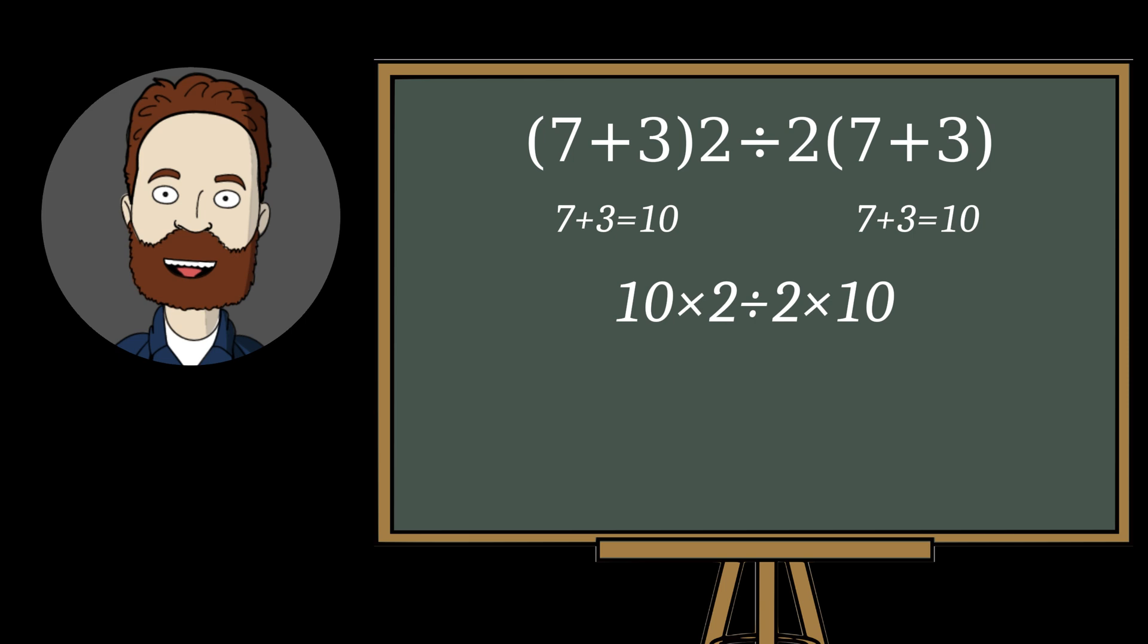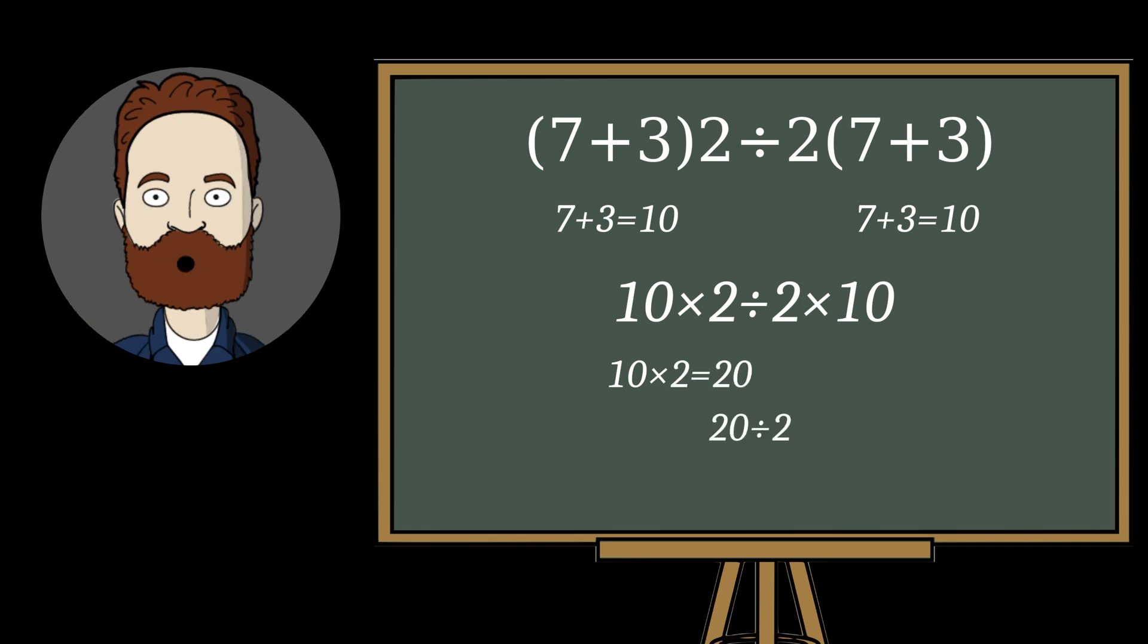and perform multiplication and division in order from left to right. 10 multiplied by 2 equals 20. 20 divided by 2 equals 10, and 10 multiplied by 10 equals 100.